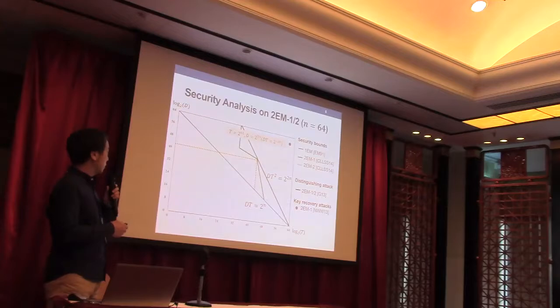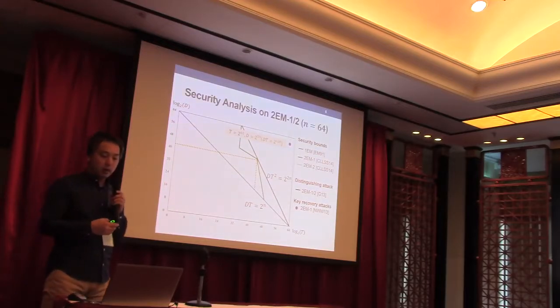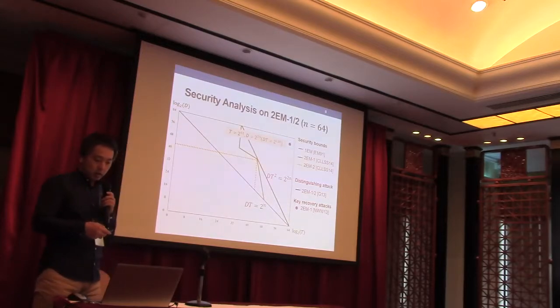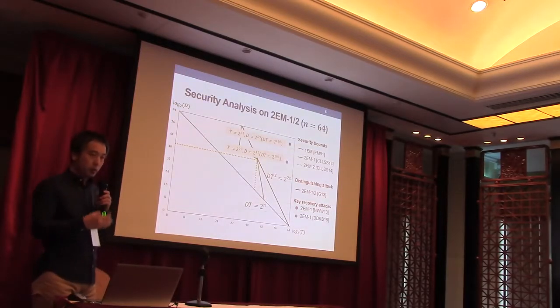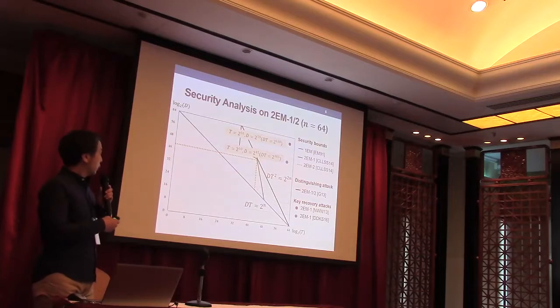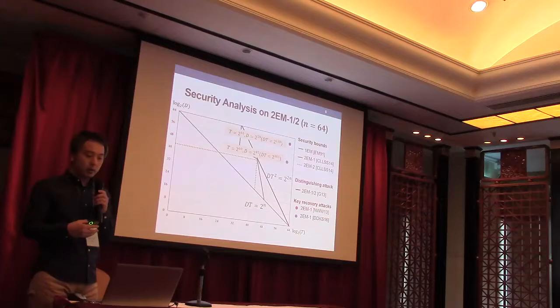Fouque et al. proposed a non-chosen plaintext attack on 2EM1 which requires 2 to the 61 time and 2 to the 59 non-chosen plaintext. Then, Nikolic et al. improved their results, which requires 2 to the 60 time and 2 to the 45 non-chosen plaintext.